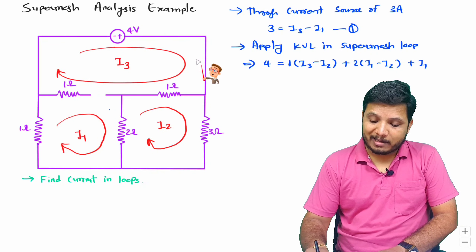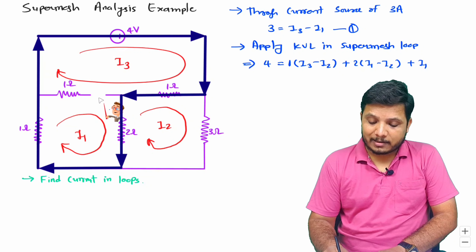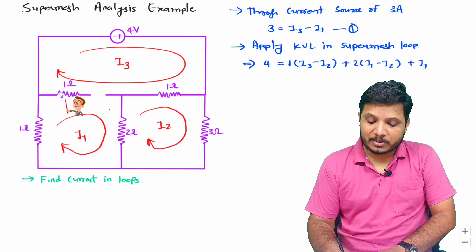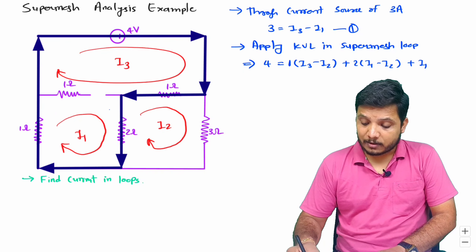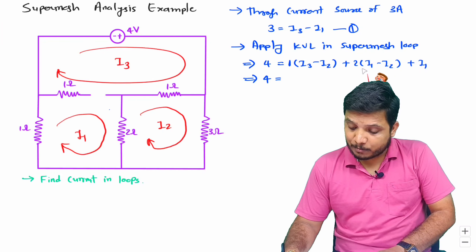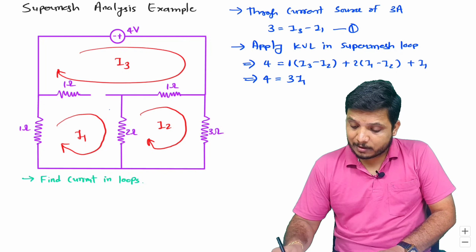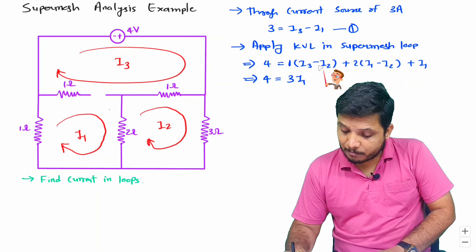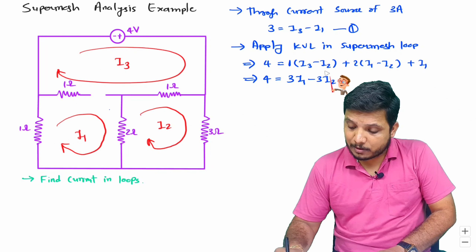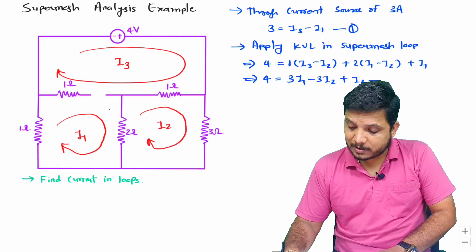I have now covered all the elements in this super mesh loop. Since this is an open circuit, this one ohm resistance will not come into the picture. Simplifying the equation: I1 and 2I1 give 3I1; minus I2 minus 2I2 give minus 3I2; and we have only I3, so plus I3. So this is equation two: 4 = 3I1 − 3I2 + I3.